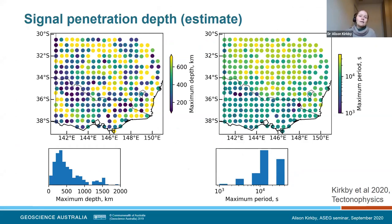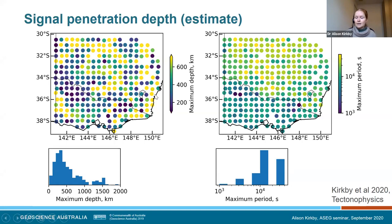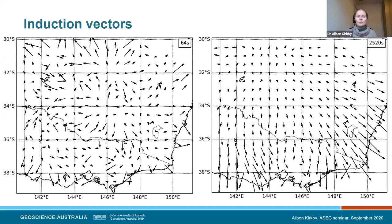I'll show you a few plots of the data. One thing you can look at with MT data is an estimate of signal penetration depth, giving an idea of how deep we can image. Signal penetration is dependent on the period you record at and also the resistivity of the subsurface, which is quite variable across the area. Across most areas we're imaging more than 100 to 200 kilometres deep, which is enough to image the entire lithosphere across most of the area of interest.